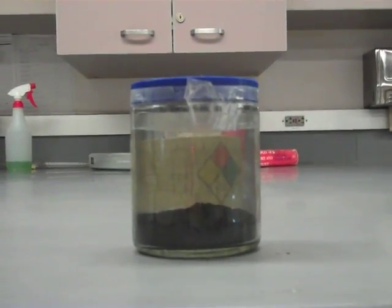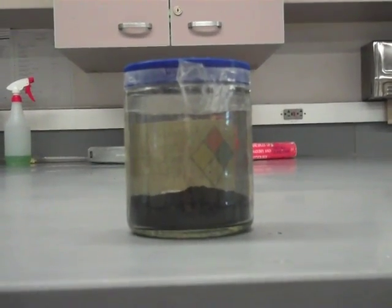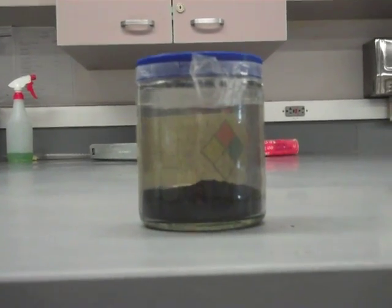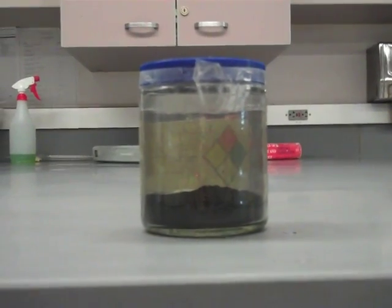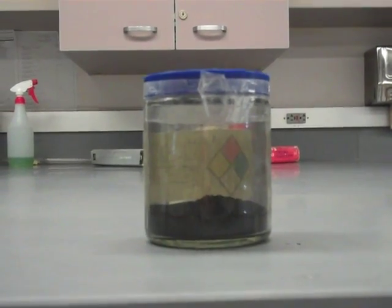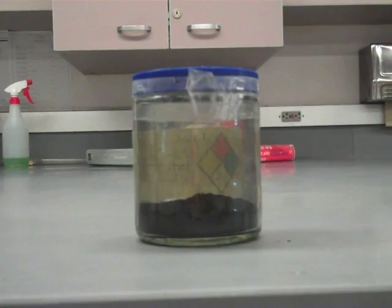This is a mole of carbon. How do I know that there are 6.02 times 10 to the 23rd atoms of carbon in this jar? Did I count them? Not likely. So how do I know that this is a mole? Let's find out.